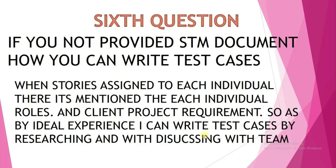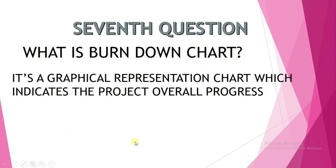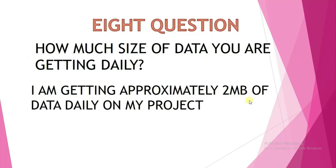The seventh question: what is a burn down chart? A burn down chart is a graphical representation that indicates the overall progress of a project — how much of the project has been completed — displayed in graph mode.